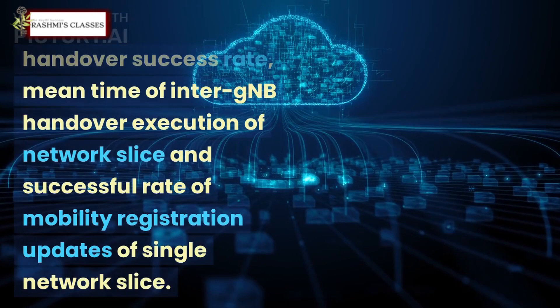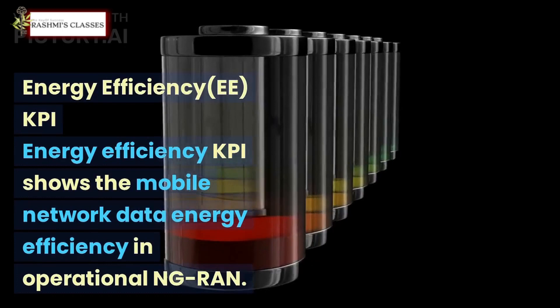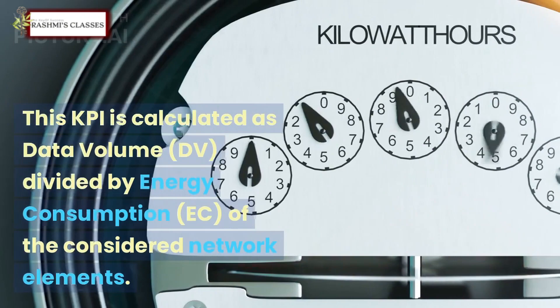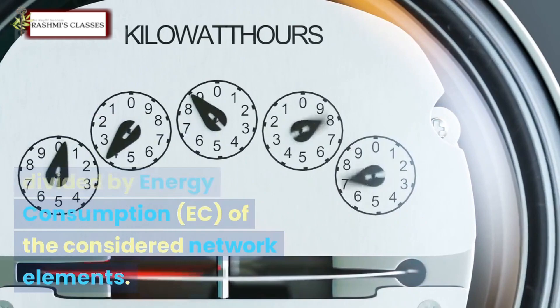Energy efficiency KPI shows the mobile network data energy efficiency in operational NG-RAN. This KPI is calculated as data volume (DV) divided by energy consumption (EC) of the considered network elements.